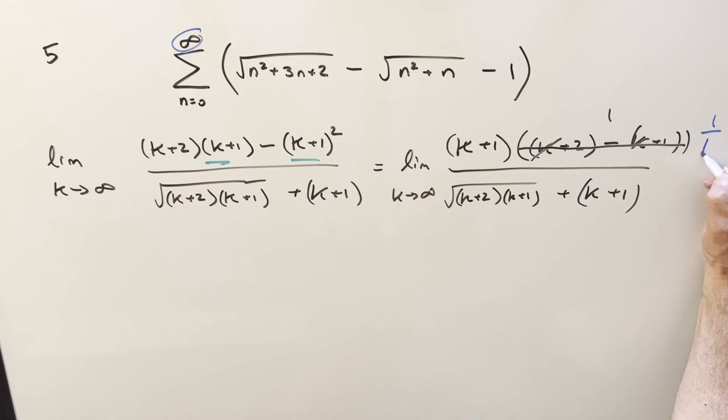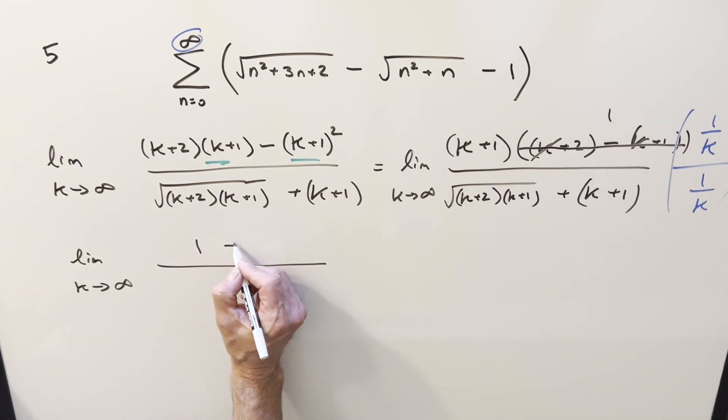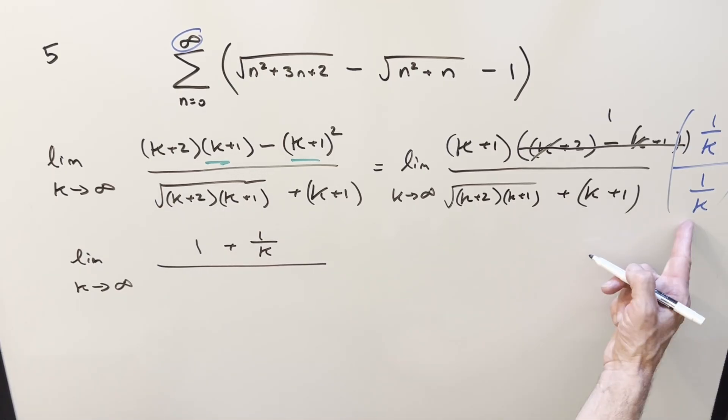You can probably do it by sight, but let's do it just to be clear. I'll multiply by one, multiply by one over k, one over k. So when we distribute this all in, one over k times k is one plus one over k. When you distribute this into the square root, inside the square root, it's going to be like one over k squared.